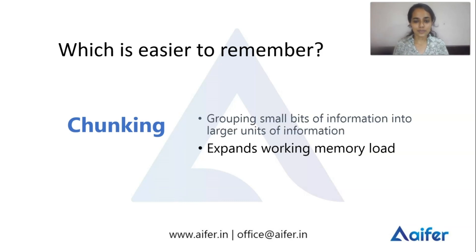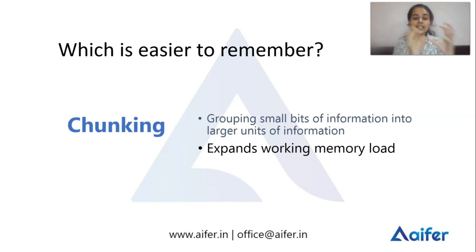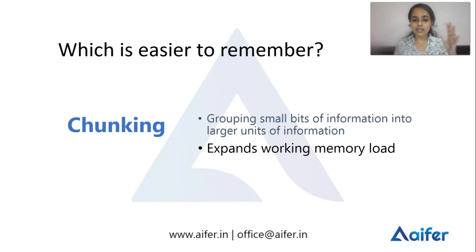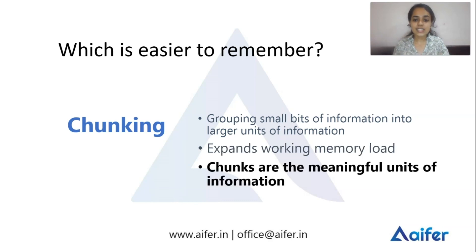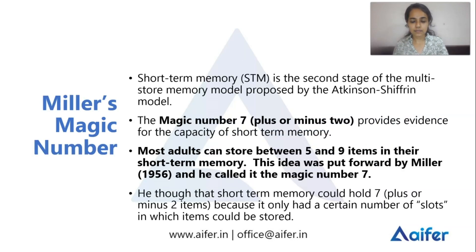Chunking is a procedure where we group small bits of information into meaningful chunks. This allows working memory, which holds 7 plus or minus 2 items, to hold more information by organizing it into larger meaningful units.